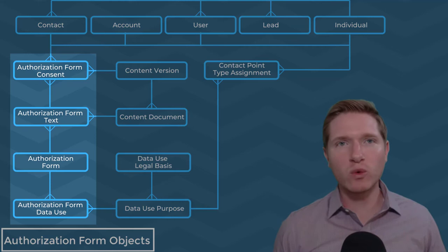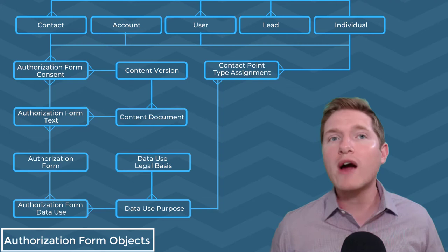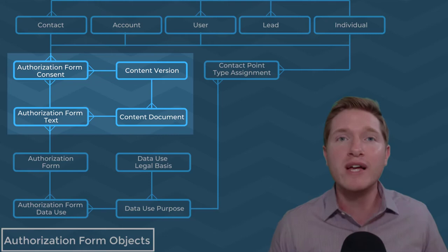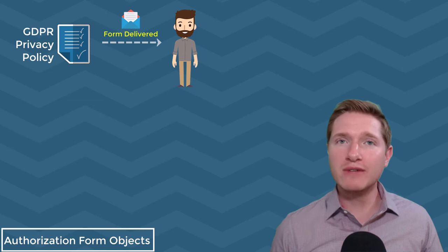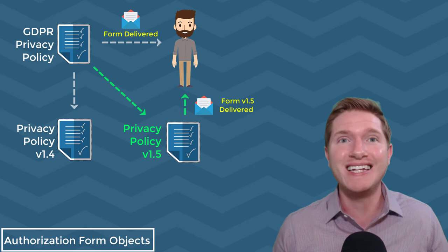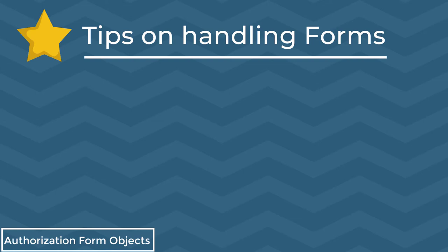Next up are the authorization form objects. These are meant to keep track of any data related to your authorization forms like terms of use, your privacy policy, and consent forms for specific regions or languages. Because regulations have different rules and requirements, you'll want to create regulation-specific forms to adhere to those requirements. The great thing about these new authorization form objects is that they tie directly to your pre-existing documentation within Salesforce. Not only can you track the form being delivered, but also which version of the form a person is consenting to. This is important because regulations change over time, so you want to make sure all of your customers are aware of your policies anytime you create a new version of your documentation. Optionally, you can choose to tie your forms to an overall legal purpose using the data use objects — for example, knowing if a form is used for marketing purposes or operational purposes such as billing.